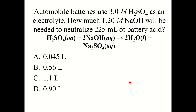Quick knowledge check: Automobile batteries use 3 M H₂SO₄ as an electrolyte. How much 1.20 M NaOH will be needed to neutralize 225 mL of battery acid? The correct answer is C, 1.1 liters. Convert volume to liters, use volume and molarity of H₂SO₄ to find moles H₂SO₄, use stoichiometry to find moles NaOH, then use moles NaOH and its concentration to solve for volume.